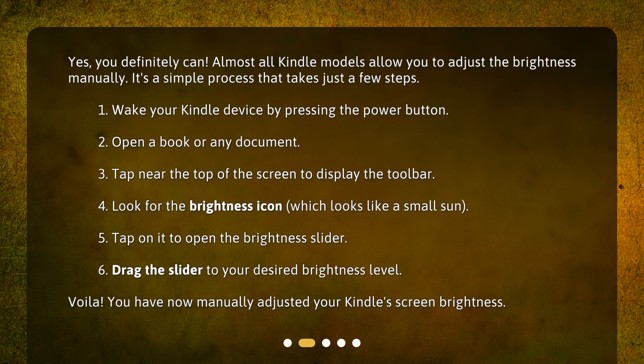1. Wake your Kindle device by pressing the power button. 2. Open a book or any document. 3. Tap near the top of the screen to display the toolbar. 4. Look for the brightness icon, which looks like a small sun.